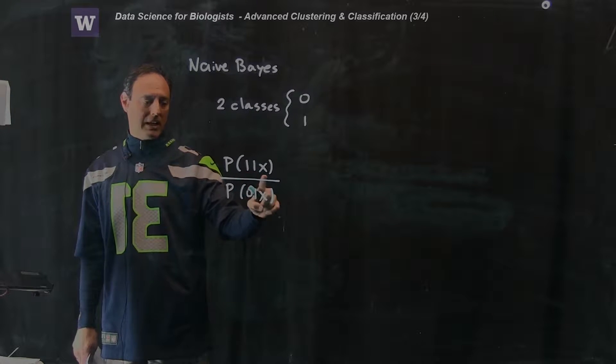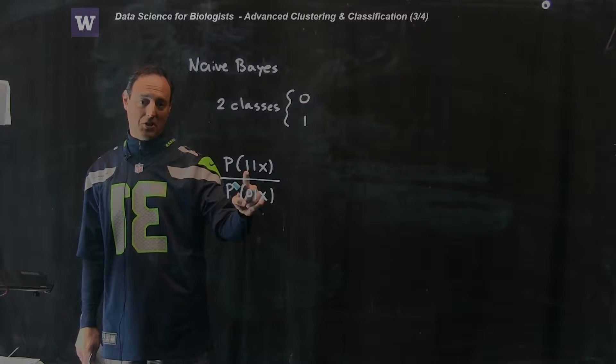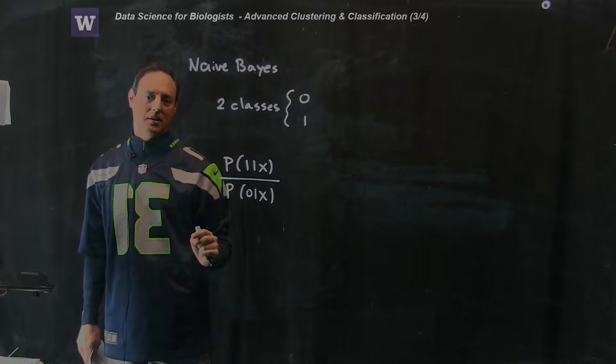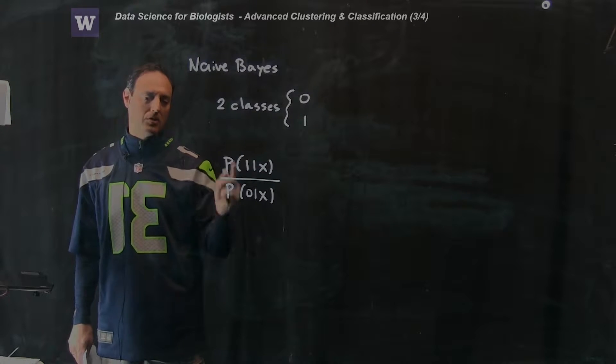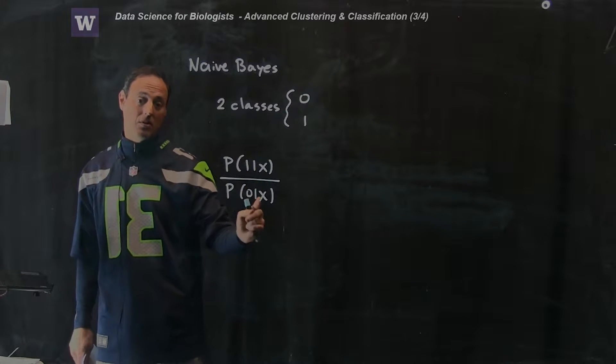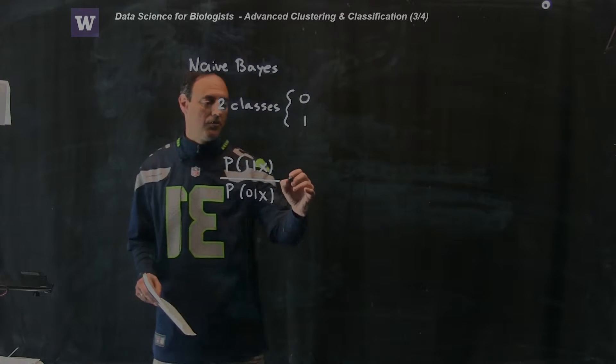What is the probability of being a 1 given the data x? Same statement as what's the probability of being 70 degrees given that it's January. Well, it's pretty low, right? What's the probability that it's 1 given x? What's the probability that it's a 0 given x? And what Bayes rule says is it can rewrite this as the following.